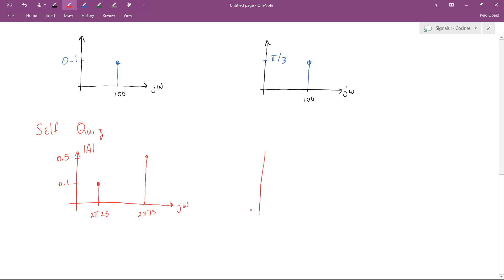And for the phase angle plots, this is the phase angle plot. At 2 pi 25, we have a phase angle of minus pi over 4. And at 2 pi 75, we have a phase angle of pi over 5.